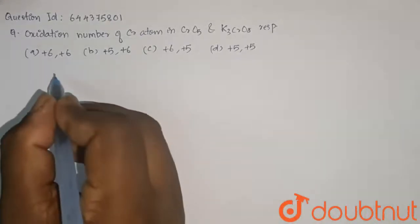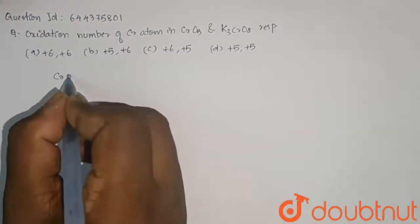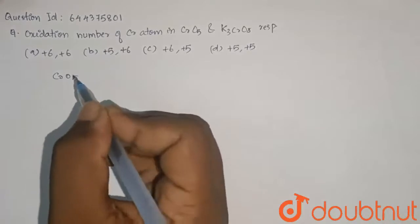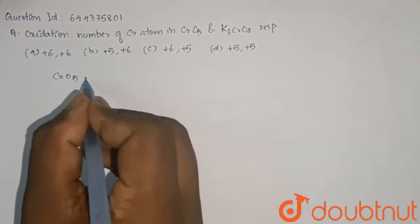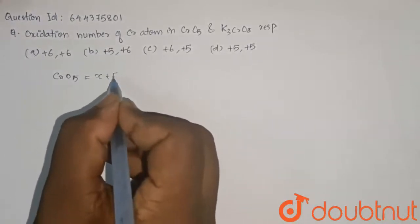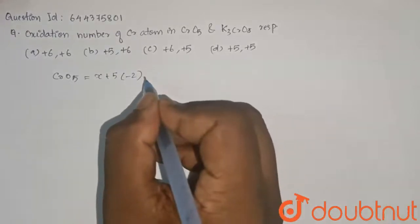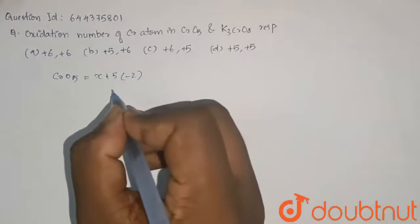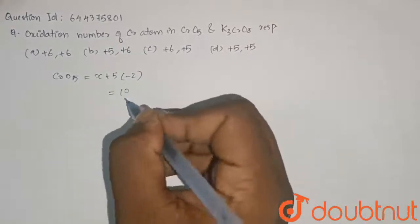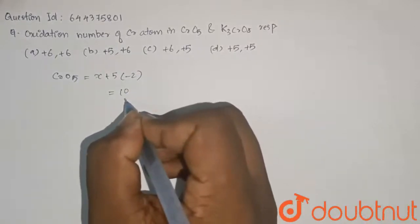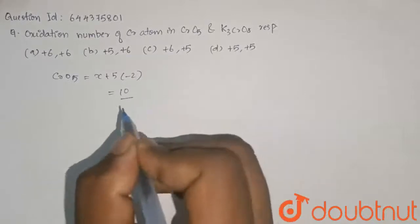There are some different exceptional conditions here. When we are taking it straight, CrO5, we can directly write it as X plus 5 into minus 2, the oxidation number of oxygen. So it will give us 10. This cannot happen. It should not be 10. Why?